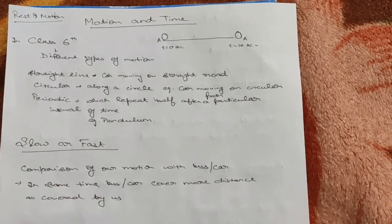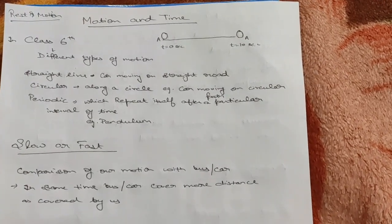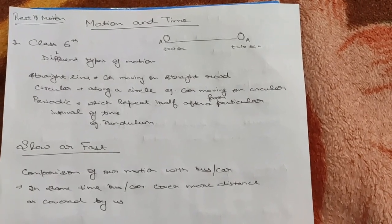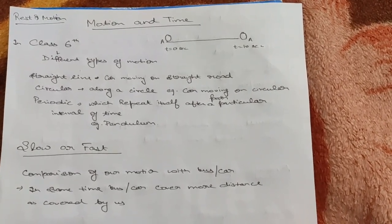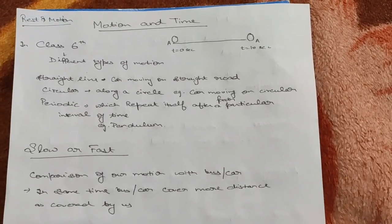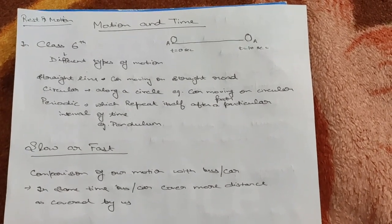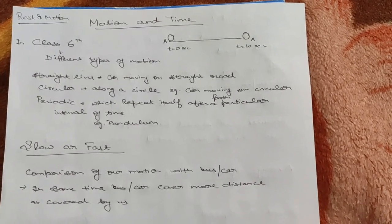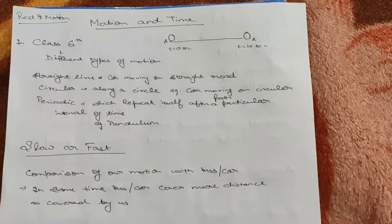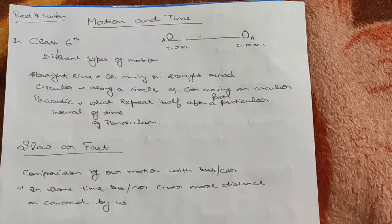In class 6th you studied different types of motions. They are straight line motion, circular motion, and periodic motion. Straight line motion means, for example, a car moving on a straight road. Circular motion means motion along a circle — for example, a car moving on a circular path, or walking along the circumference of a circular park.